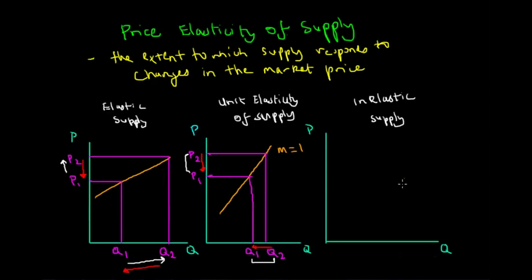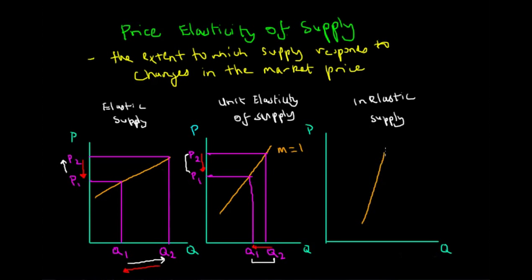Now looking at the third example, an inelastic supply curve suggests that changes in price don't usually affect the quantity supplied by producers. That could be for reasons such as resources, timing, and storability issues — we'll go through those issues in a further lecture. For now, let's assume that the inelastic supply curve is very steep.